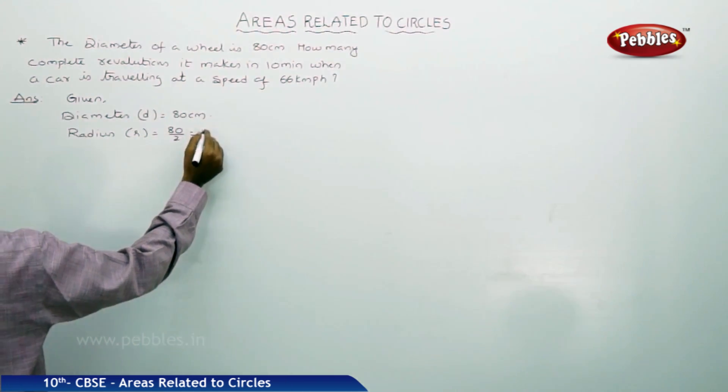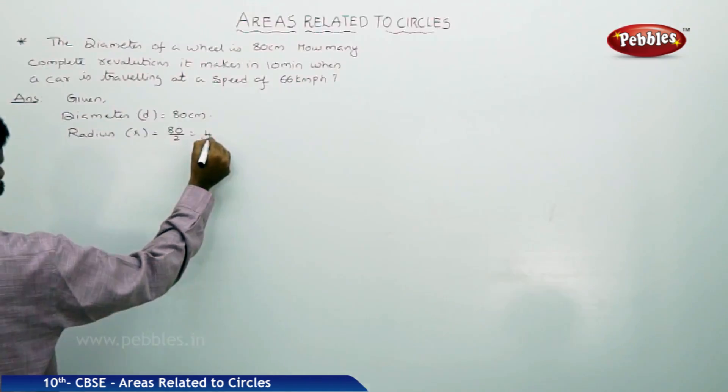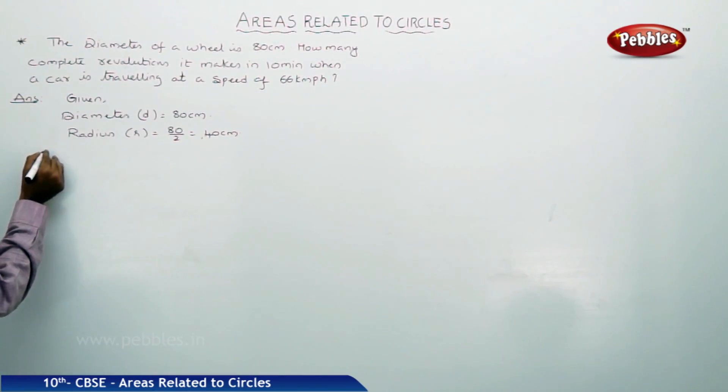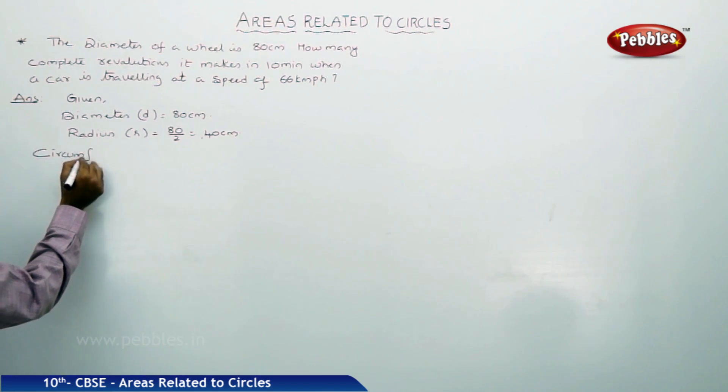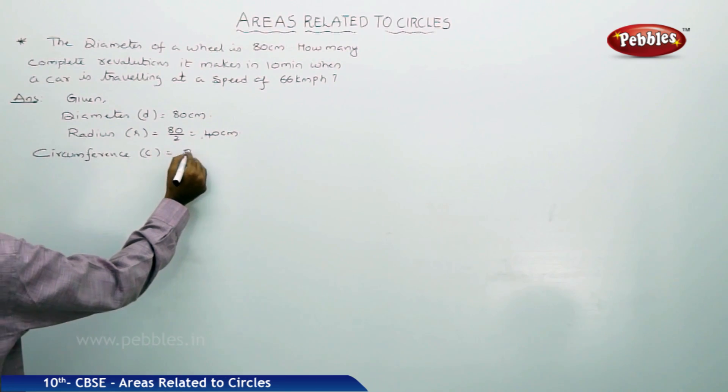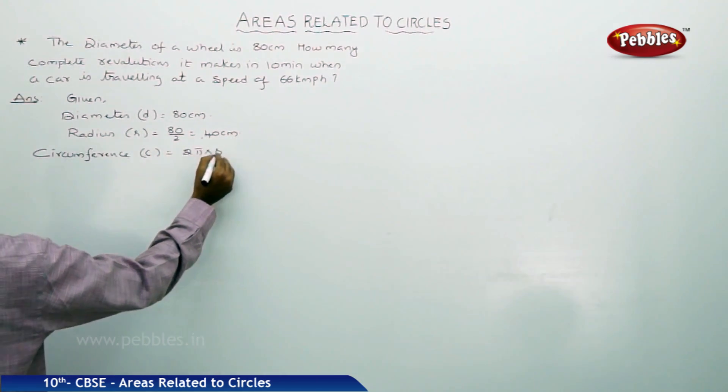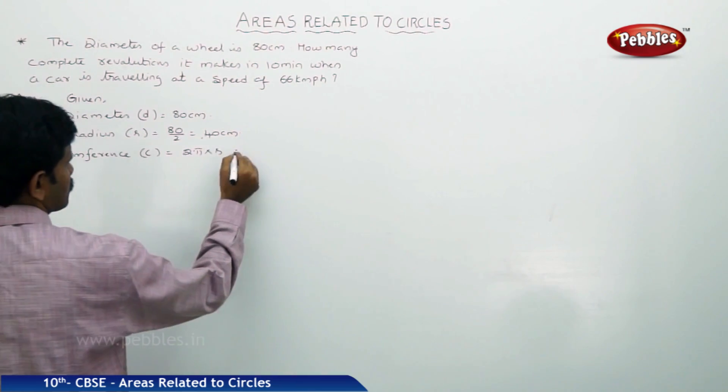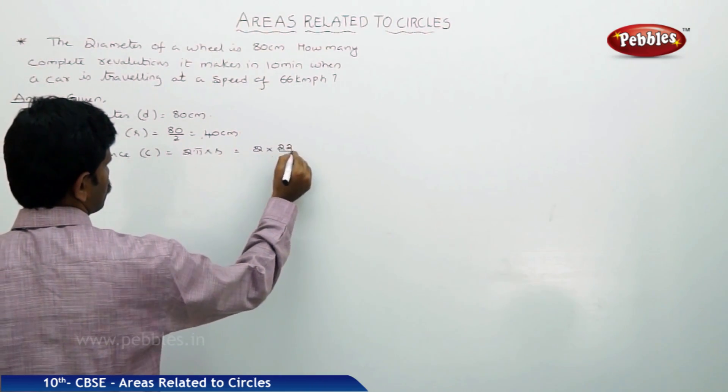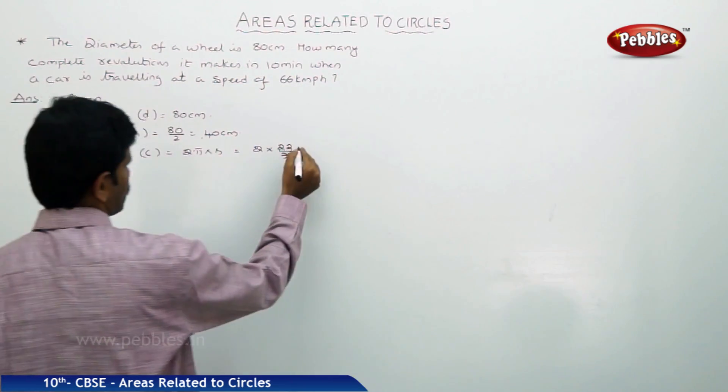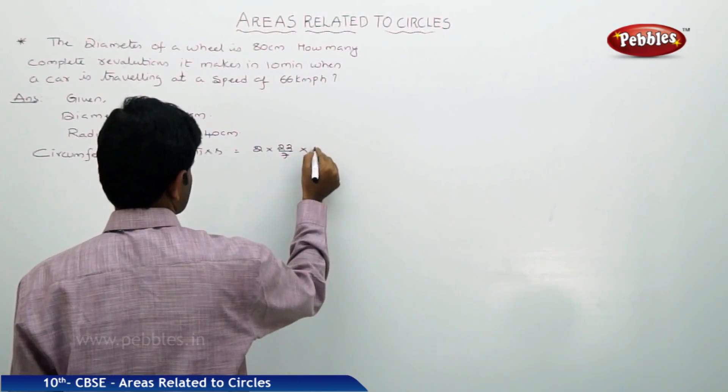Answer: radius is 40 centimeters. Now immediately find the circumference. Circumference is equal to 2 times pi times r. That is 2 times 22 by 7 times radius, the 40.